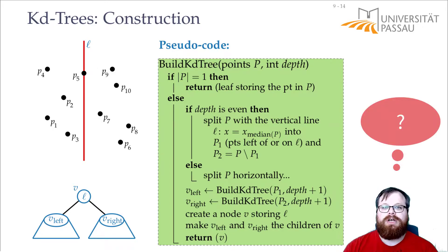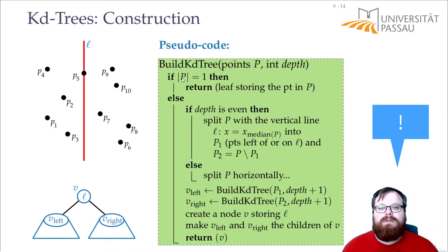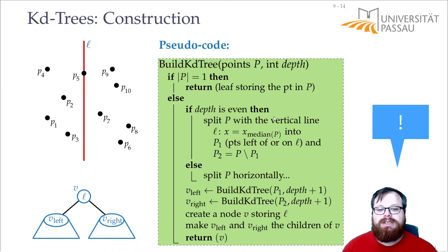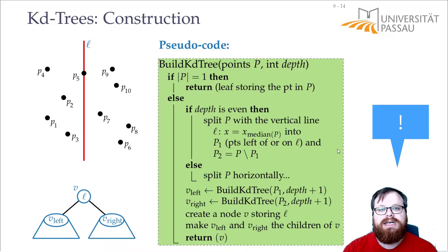Can you try to write down the recurrence formula for this pseudocode? In the base case, we only have one point and we return a leaf, so we take O(1) time. Otherwise, we split the whole set of points, and to split it we have to look at every point once. So we have to find the median and split it into two sets — that takes O(n) time.